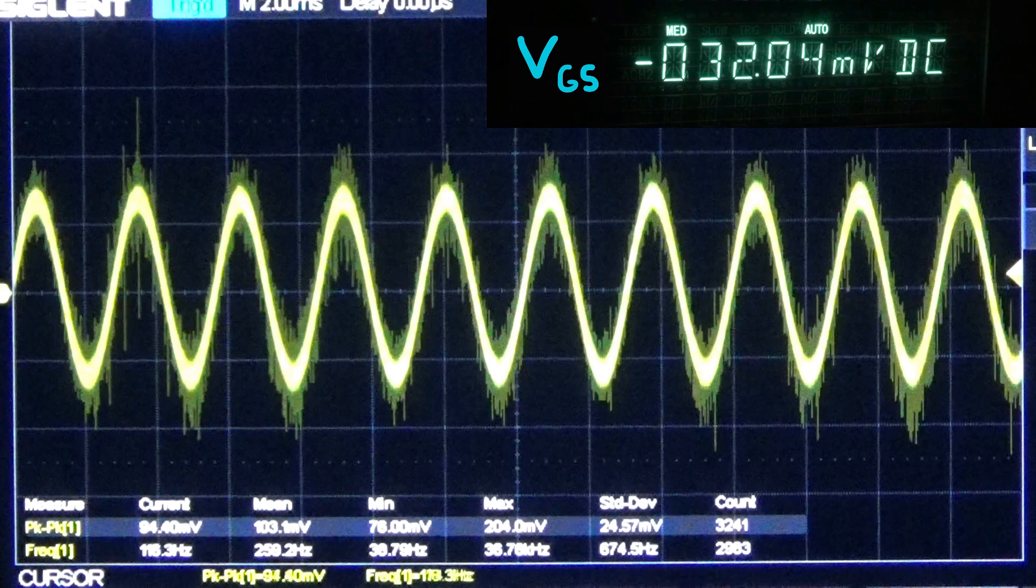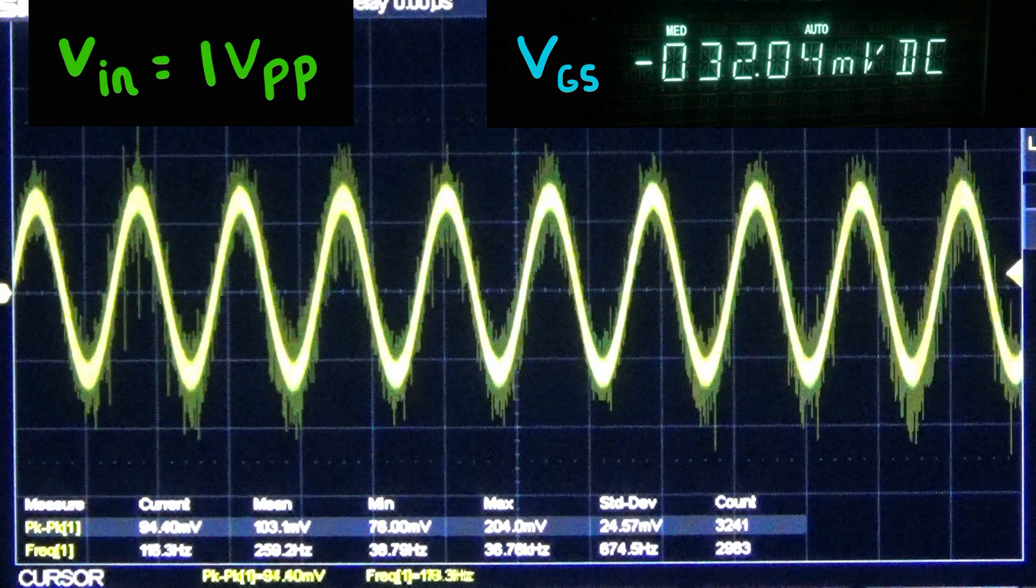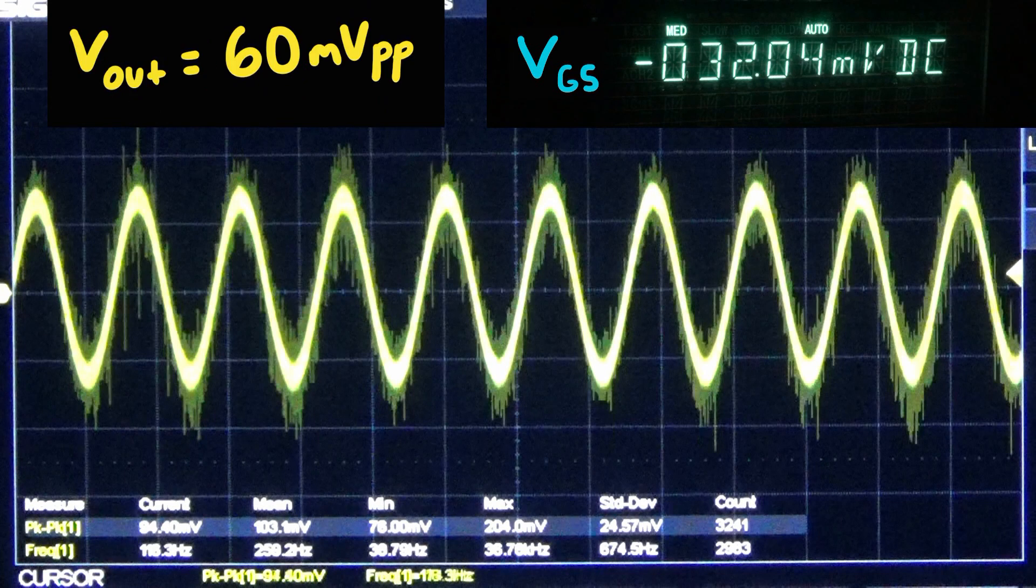With the small gate to source voltage, we see that the output is severely attenuated. The input signal is a 1 volt peak to peak sine wave. We are measuring a 60 millivolt peak to peak output.